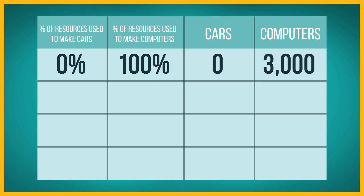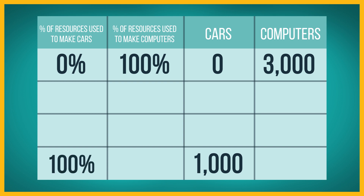Suppose the economy can produce 1,000 cars when it uses all of its resources to make cars. If the economy uses all of its resources to make cars, it cannot produce any computers.